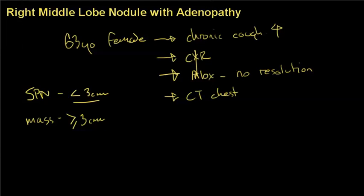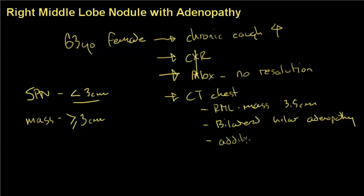So how are we going to work this patient up? What are the findings in the CT scan of the chest? We have a right middle lobe mass about 3.5 cm, bilateral hilar adenopathy, additional subpleural nodules, and a left adrenal mass.